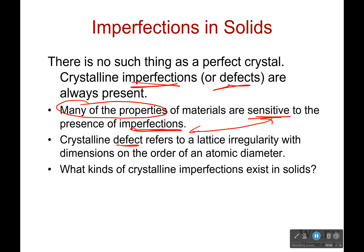When we define these crystalline defects, we say it's a lattice irregularity, typically on the order of an atomic diameter. So what kind of crystalline imperfections exist in solids? If you're confused by this, we're going to show a picture of it soon, so don't worry about the fancy term here.